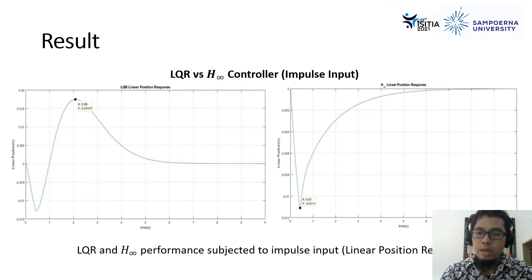From the model that we have defined previously, now we try to investigate the LQR and H-infinity performance based on the three disturbances that we already introduced in the previous slide. Here, for the LQR and H-infinity performance, for the linear position with the impulse input disturbance, we get that H-infinity has a better performance than LQR, which is from our investigation, we get that H-infinity has around 36.46% less maximum distance rather than the LQR.